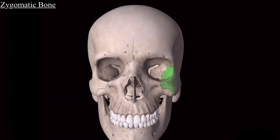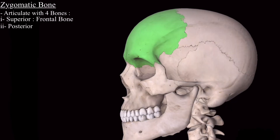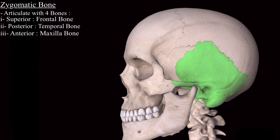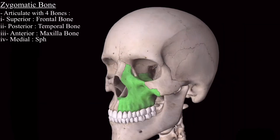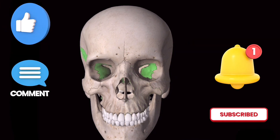In summary, the zygomatic bone is attached to four bones: superiorly to the frontal bone, posteriorly to the temporal bone, anteriorly to the maxilla bone, and medially to the sphenoid bone. That's all about the zygomatic bone. Thank you.